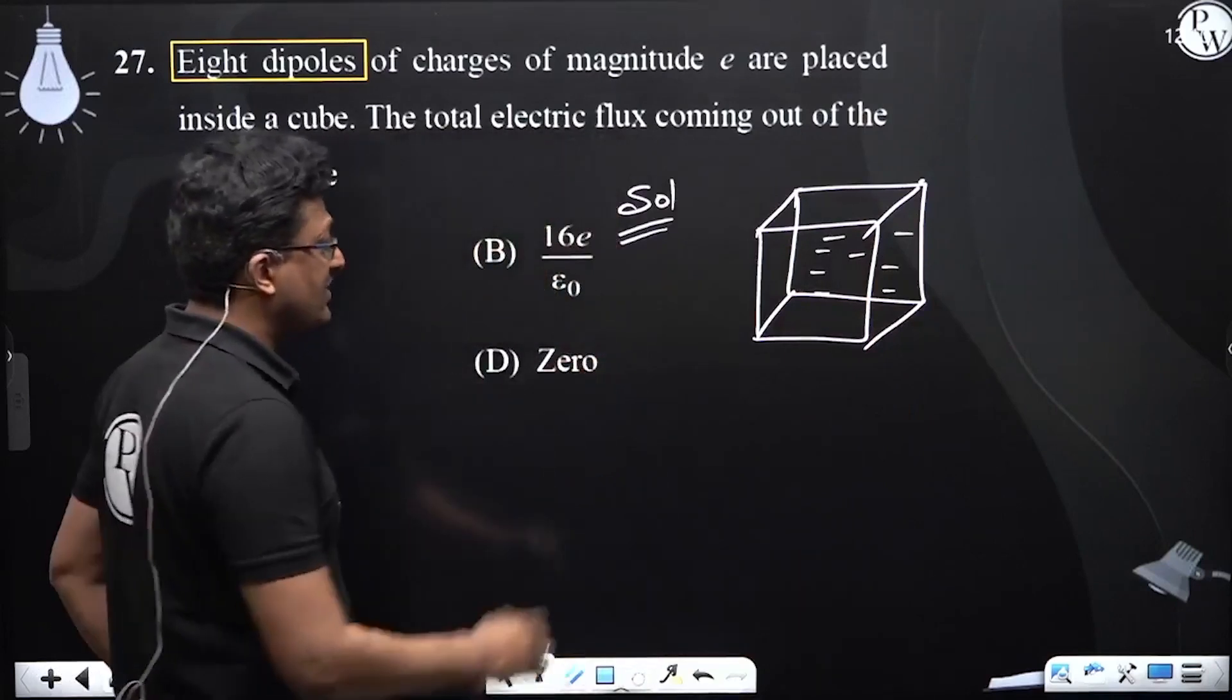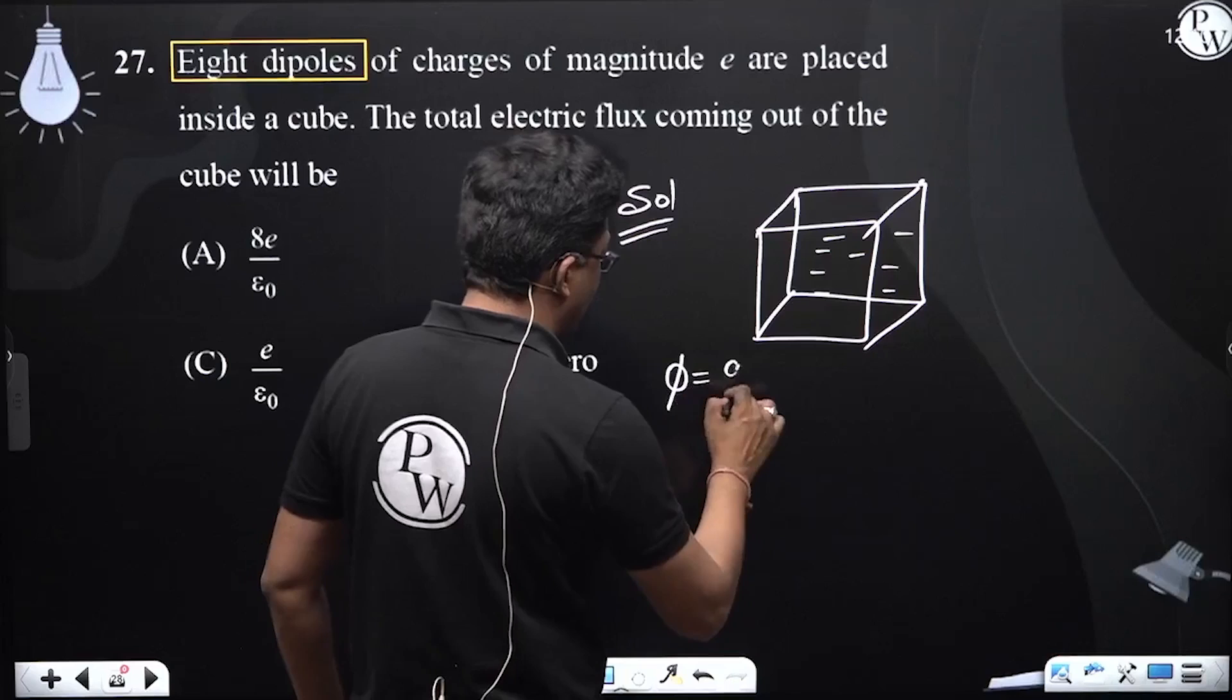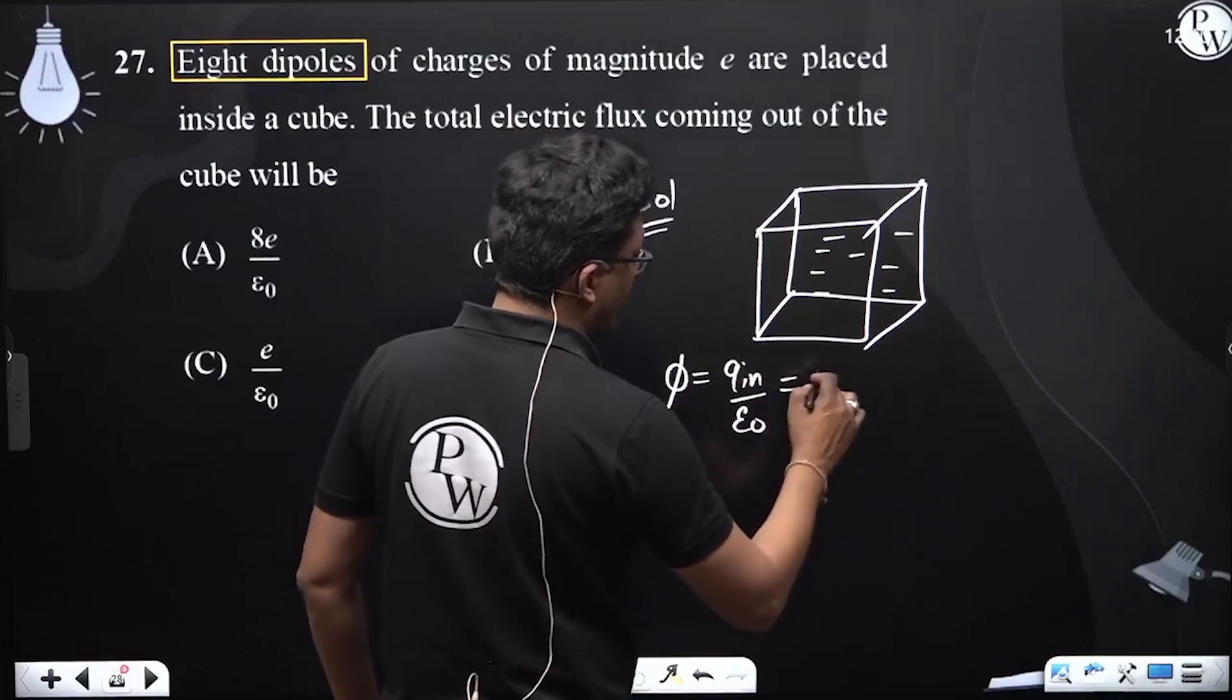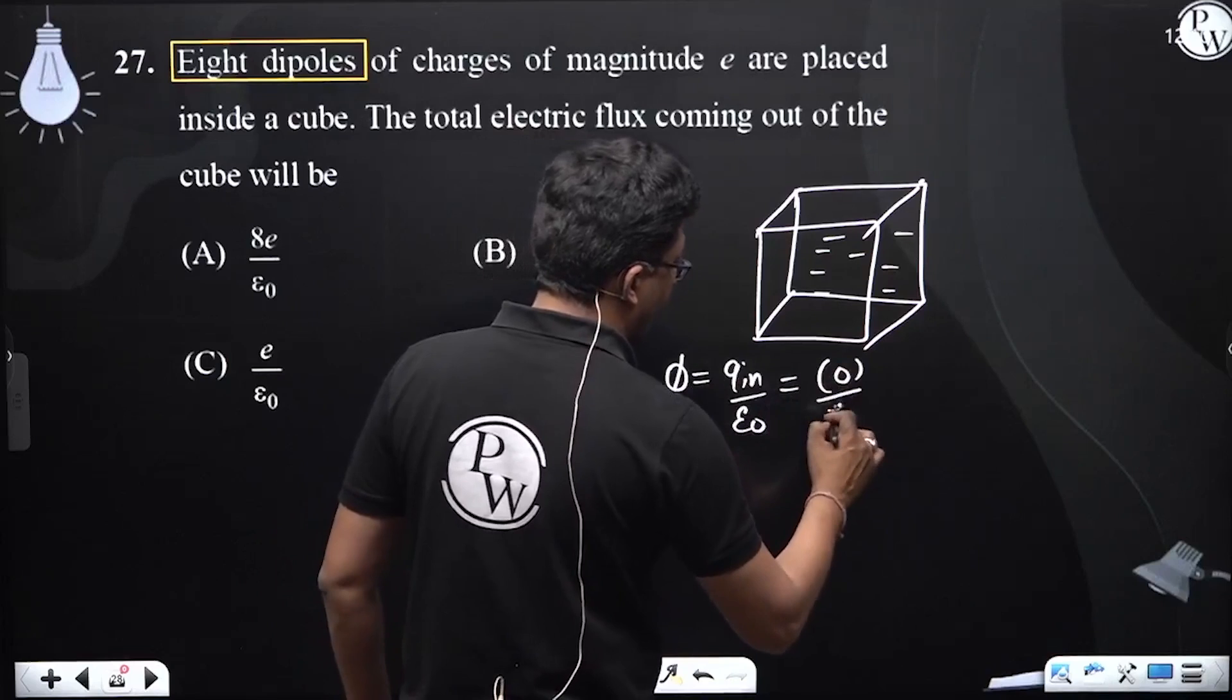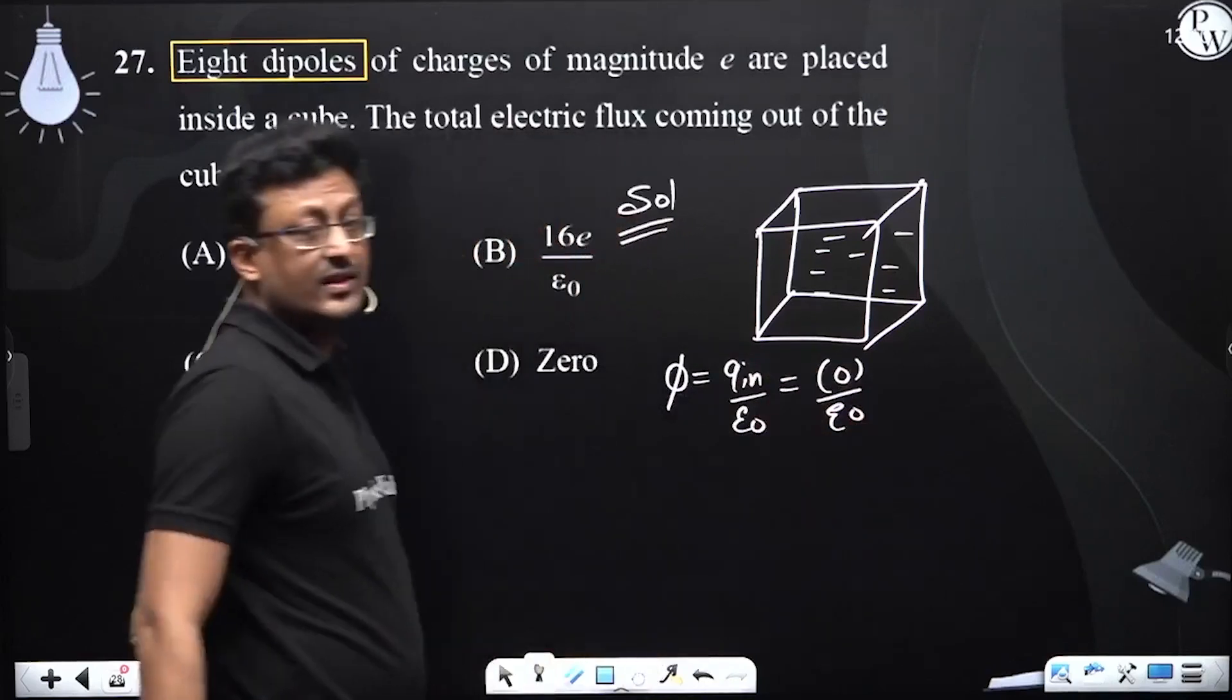So what is the net charge? For flux we need to use q enclosed by epsilon not. Net q will be zero by epsilon not, so the flux across it will be